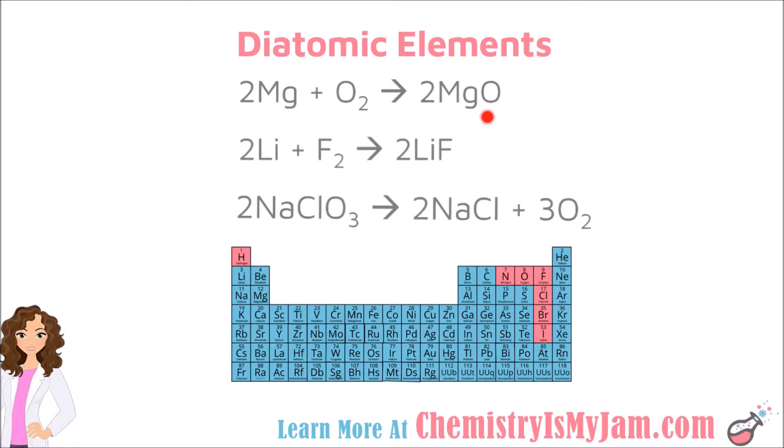Over here, oxygen was not by itself, so it doesn't necessarily get a 2. In this case, when oxygen is part of a compound, its subscripts come from crossing down charges. Magnesium oxide does not have any subscripts because magnesium has a charge of plus 2, oxygen is minus 2. Those charges are balanced out, so there were no subscripts needed. So you are only looking at this 2 concept with your diatomics when they are by themselves.